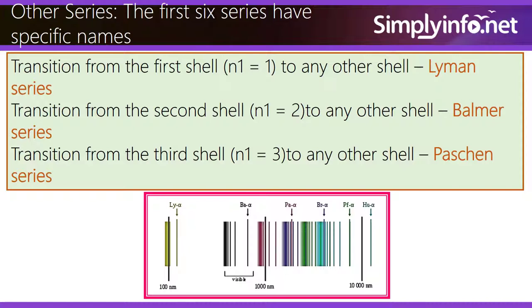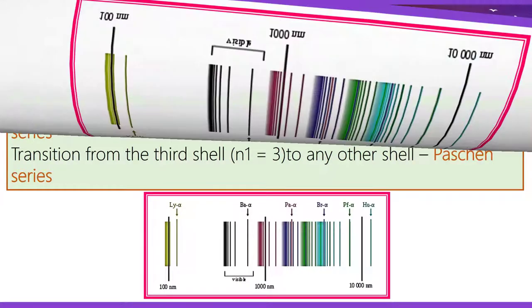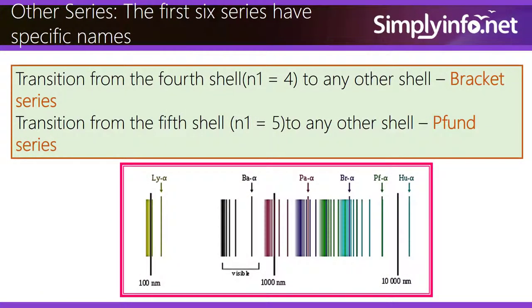Transition from the third shell, N1 equals 3, to any other shell is the Paschen series. Transition from the fourth shell, N1 equals 4, to any other shell is the Brackett series.